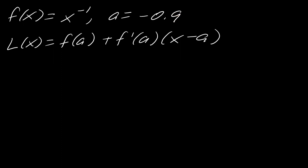So what would be a close number to 0.9 that would be easier to work with? The better number in this case would be a equals negative 1. So if I come up with a linearization around negative 1, then that will actually get me pretty darn close to negative 0.9. And we'll do a little comparison of this in a second.